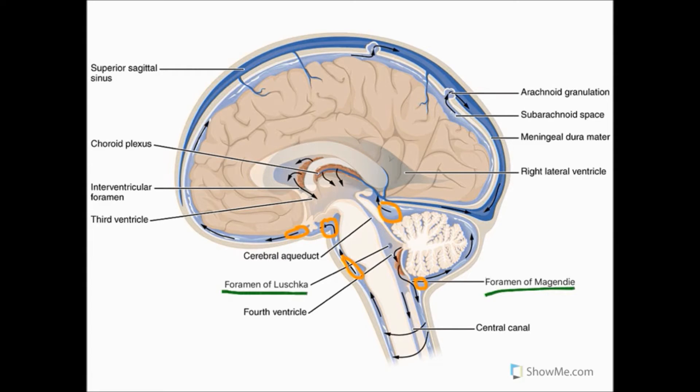The cerebral aqueduct and foramina are very small and narrow, which means they can easily become blocked, causing increased pressure in the ventricles. This condition is known as hydrocephalus, but this will be covered in another video.